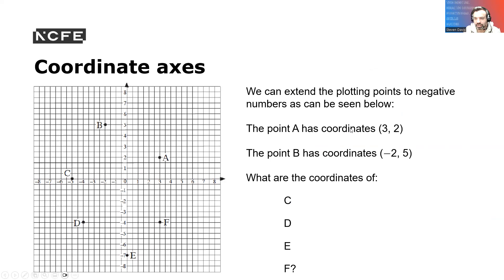Coordinate axes — we can extend the plotting of points to navigate negative numbers as shown. The point A has coordinates three two. B has the coordinates of minus two along the corridor and up the stairs.